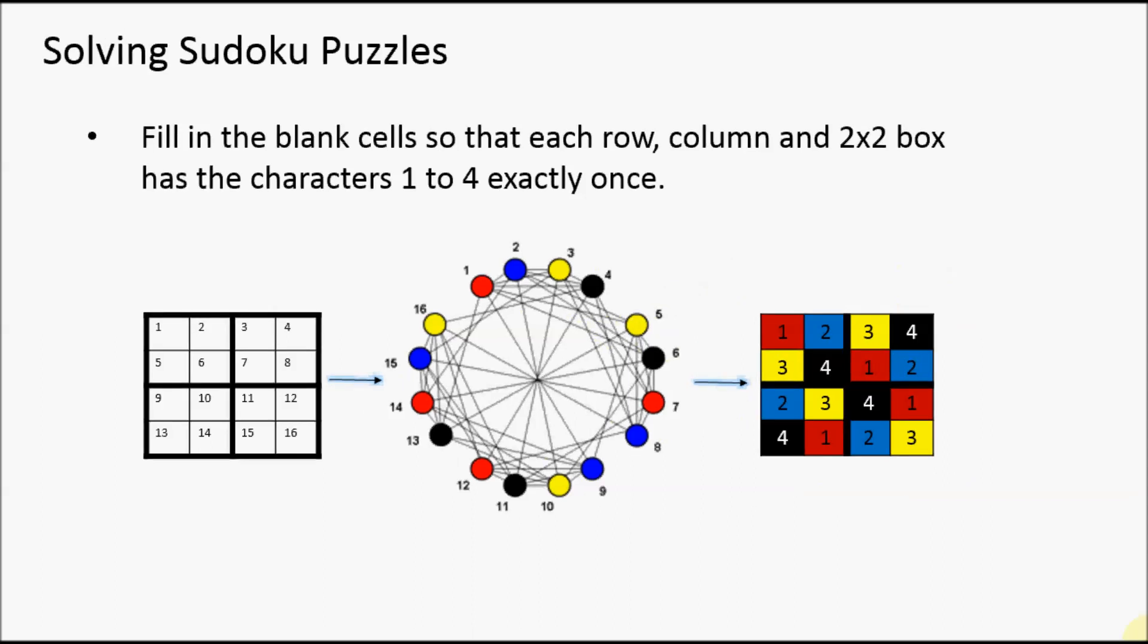Of course, as we saw, usually in Sudoku problems, some of the cells are already filled in for you, and those are the clues that help you fill out the rest of the grid. In graph coloring, this corresponds to some vertices already being colored for you, and you just having to color the rest.